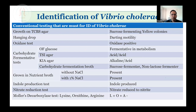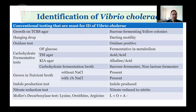Identification of Vibrio cholerae can be conventionally done using the standard protocol followed in most labs. Growth on TCBS agar — because the organism is sucrose-fermenting, yellow-colored colonies will be seen. That will be the starting point when trying to isolate the organism from stool sample. Generally, hanging drop is done. The organism shows darting motility. Oxidase test is positive.